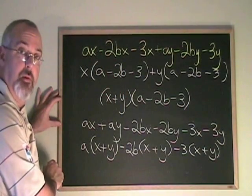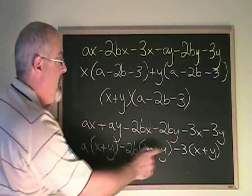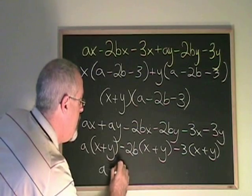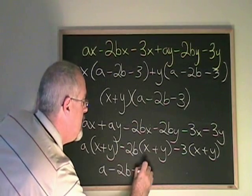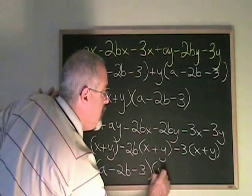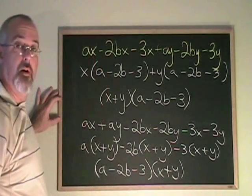If I want to use the distributive property to rewrite my answer with these three terms together, I get a minus 2b minus 3 in one bracket and x plus y written only once in the other bracket.